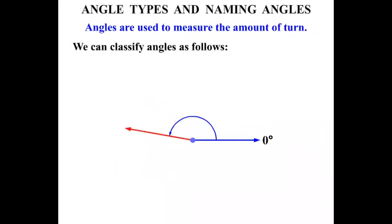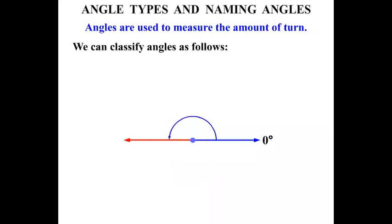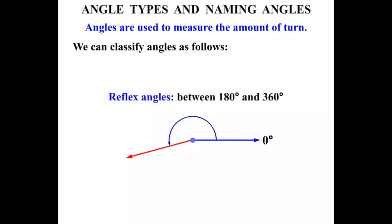Now we're getting towards a Straight Angle. This is a Straight Angle — it equals 180 degrees exactly. Now once we go past the Straight Angle, we get to Reflex Angles. These are between 180 degrees and 360 degrees.